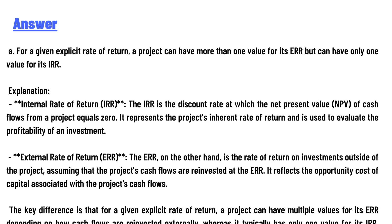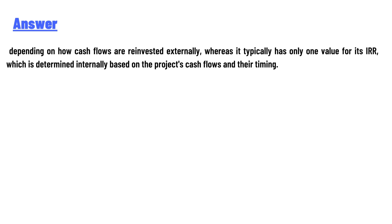The key difference is that for a given explicit rate of return, a project can have multiple values for its ERR depending on how cash flows are reinvested externally, whereas it typically has only one value for its IRR, which is determined internally based on the project's cash flows and their timing.